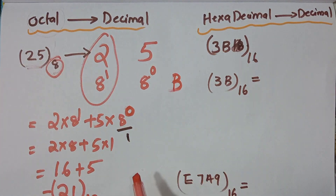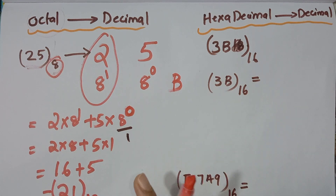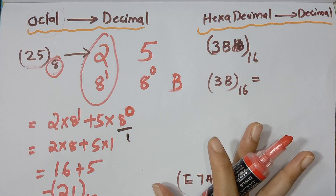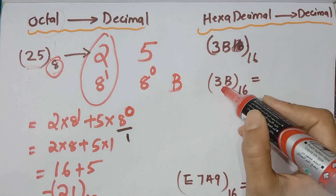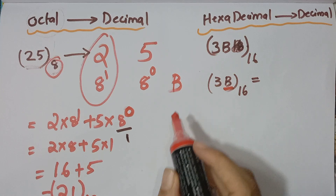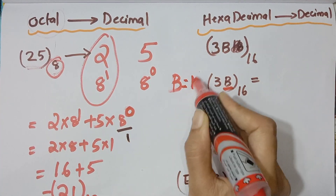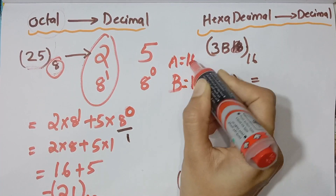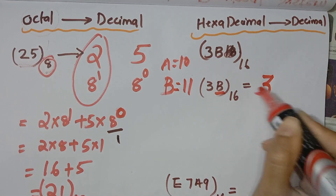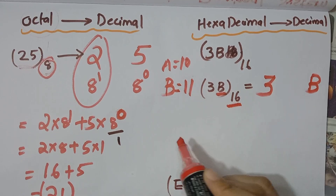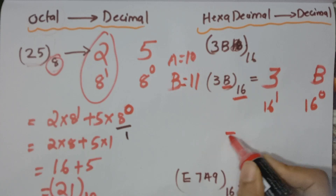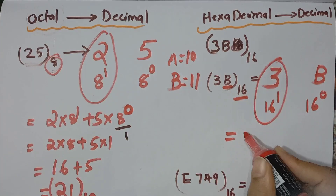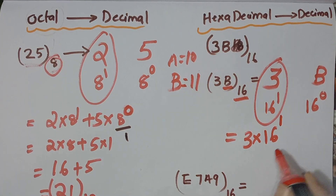Now hexadecimal. In hexadecimal, A, B, C, D are digits. A is equal to 10. B is equal to 11. We have already uploaded a number system video explaining this. So for 3B in hexadecimal, base 16: this involves 16 raised to 0 and 16 raised to 1.